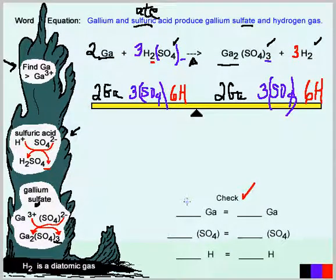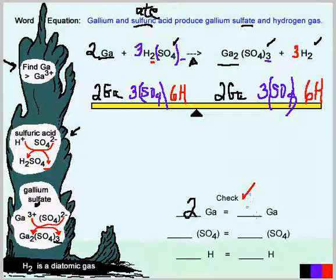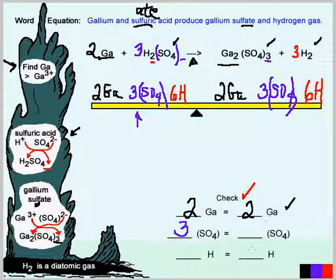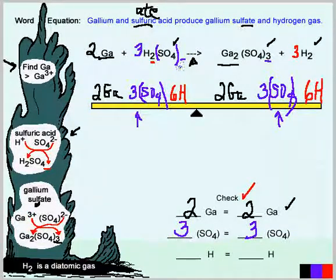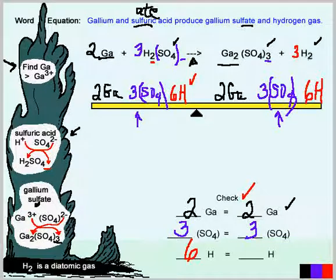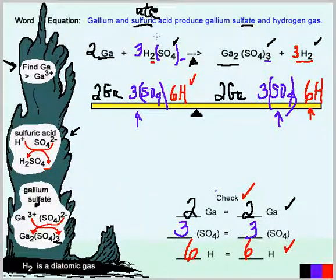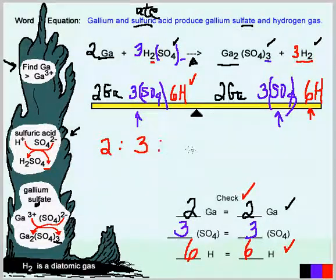We do a final check: gallium — 2 on the reactants side and 2 on the products side, balanced. Sulfate groups — 3 SO₄ on the reactants side and 3 SO₄ on the products side, balanced. Hydrogen — 2 × 3 = 6 on the reactants side and 2 × 3 = 6 on the products side, balanced. The balanced equation has a coefficient ratio of 2 : 3 : 2 : 1 : 3.